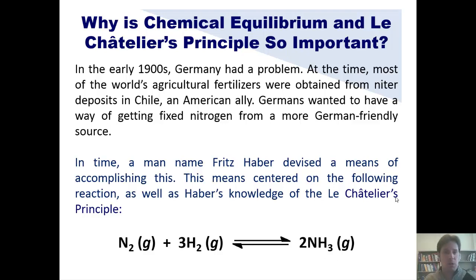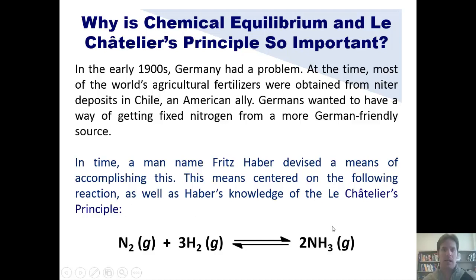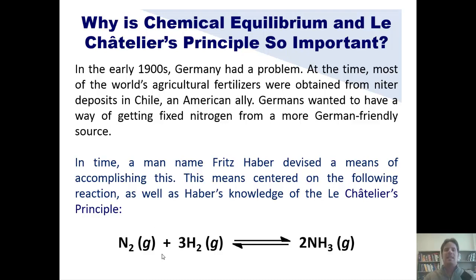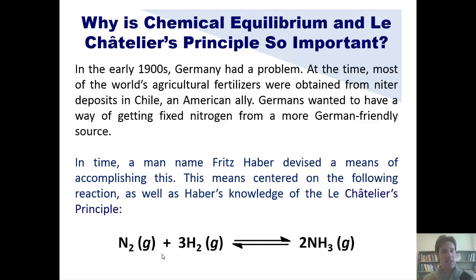Haber understood Le Chatelier's principle. He knew that if it were somehow possible to reach in and remove NH3, then the equilibrium reaction would fill in that hole by producing more NH3. If you could reach in and remove more NH3, the reactants would shift further to produce more NH3. And if you could do that again and again, you could make this reaction behave as if it were a completely one-way reaction — converting reactants totally to product — and you could get a lot of NH3, or fixed nitrogen, useful for plants and animals.